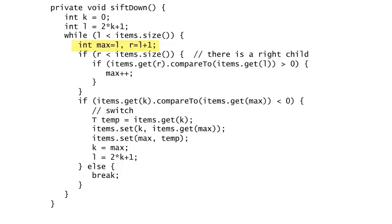Then compute r as l plus 1, which is the same as 2k plus 2, since l is already 2k plus 1. If there is in fact a right child, which is determined by checking if r is inside the array list bounds, then the right and left children are compared. If the right child is greater, then max, which was originally set to l, is incremented by 1, which sets it to r. Otherwise, max remains at l.